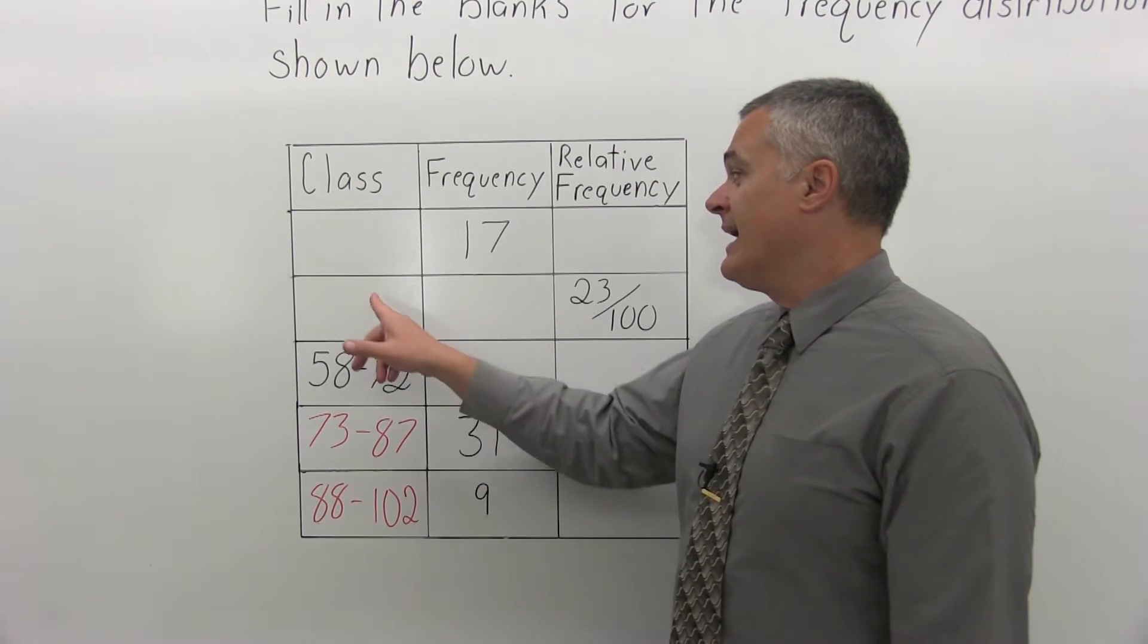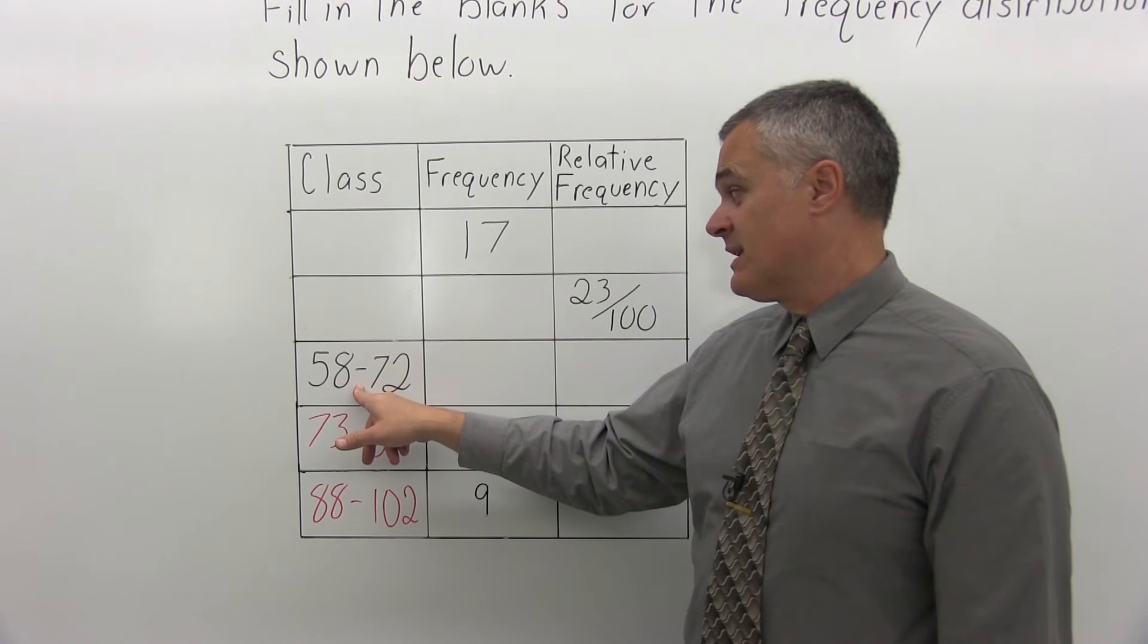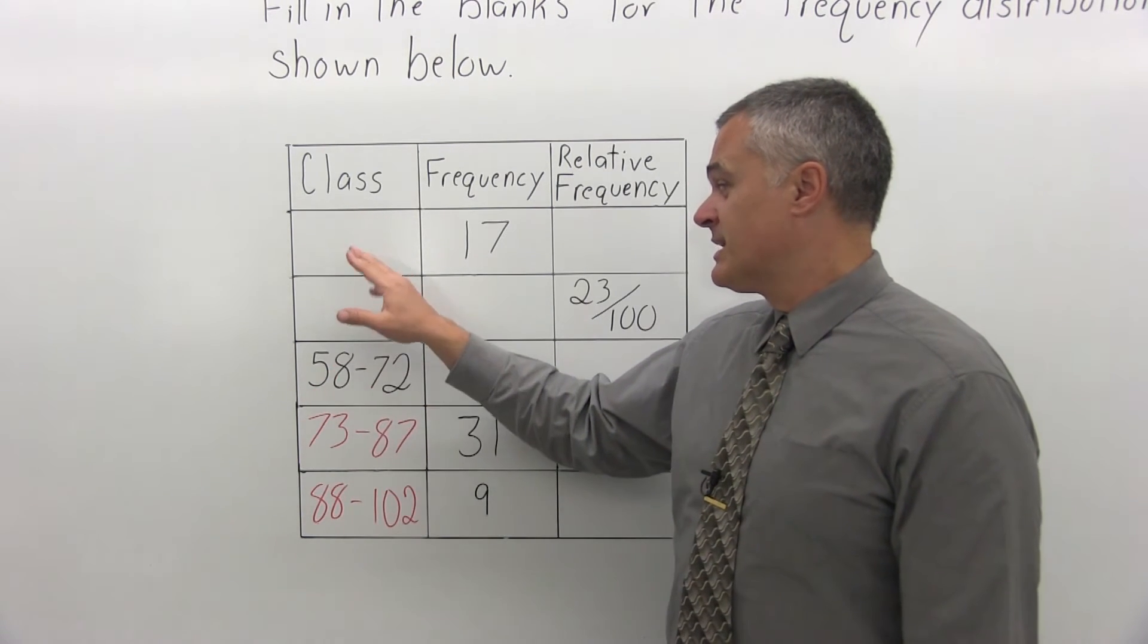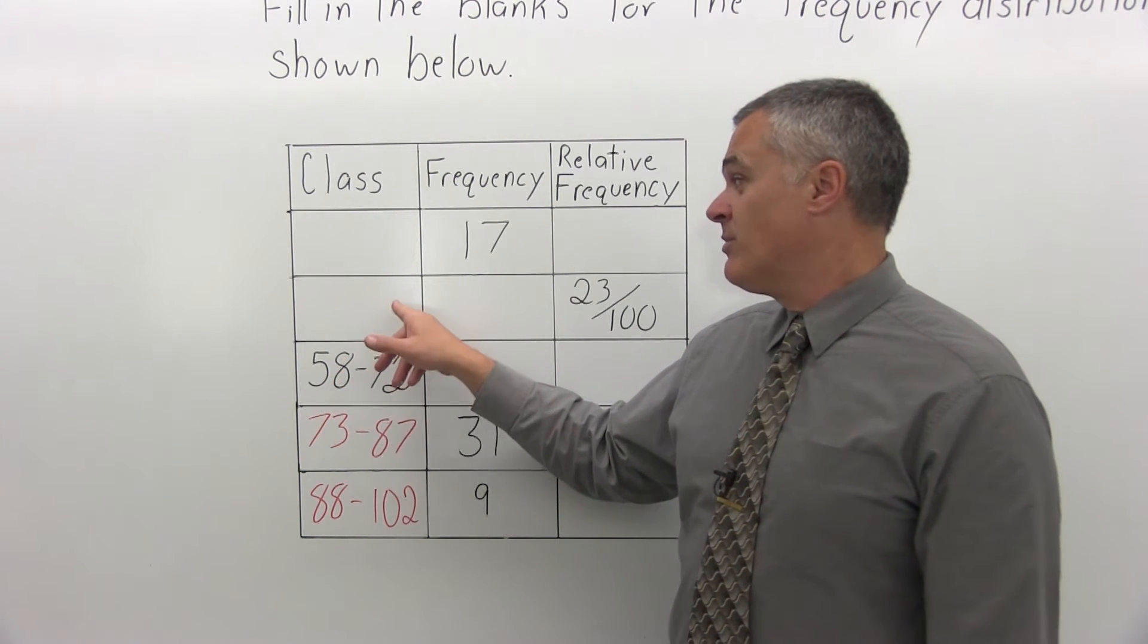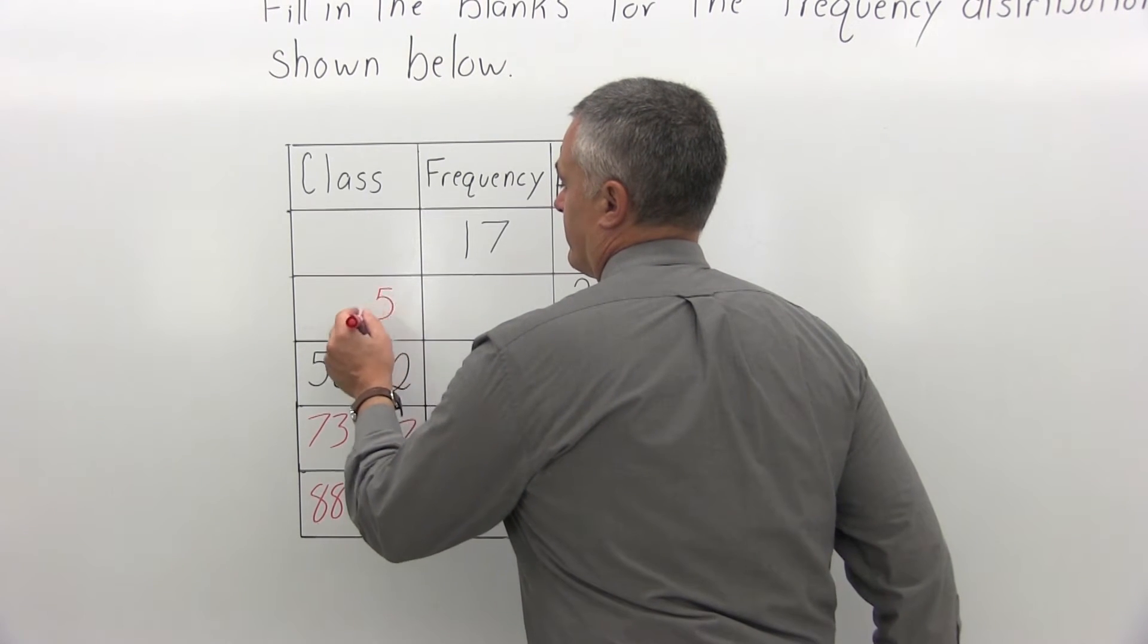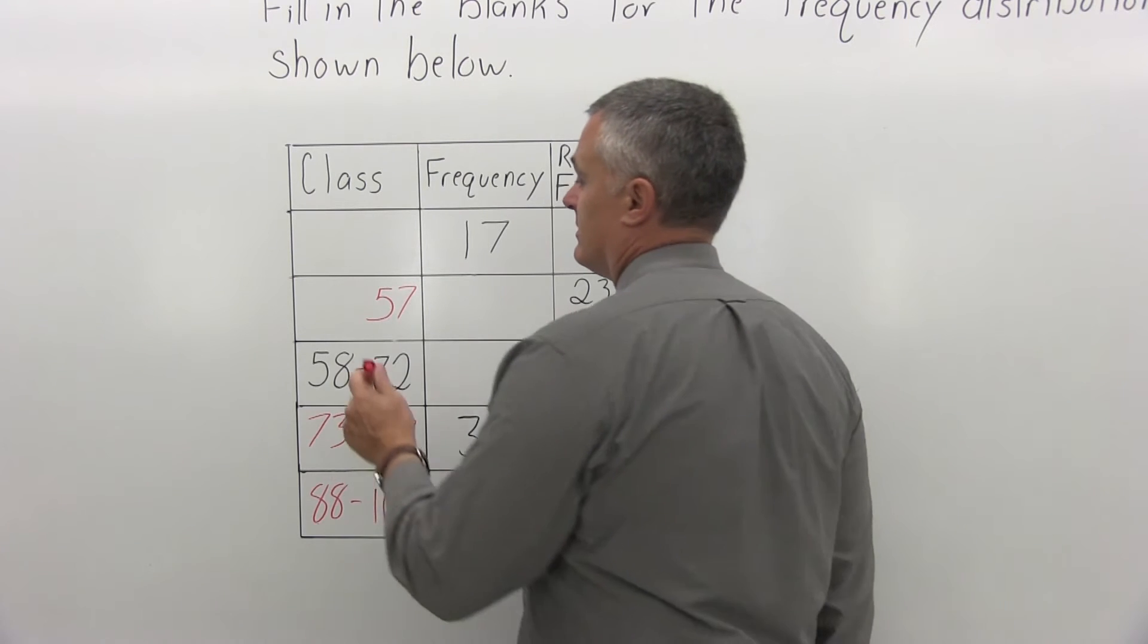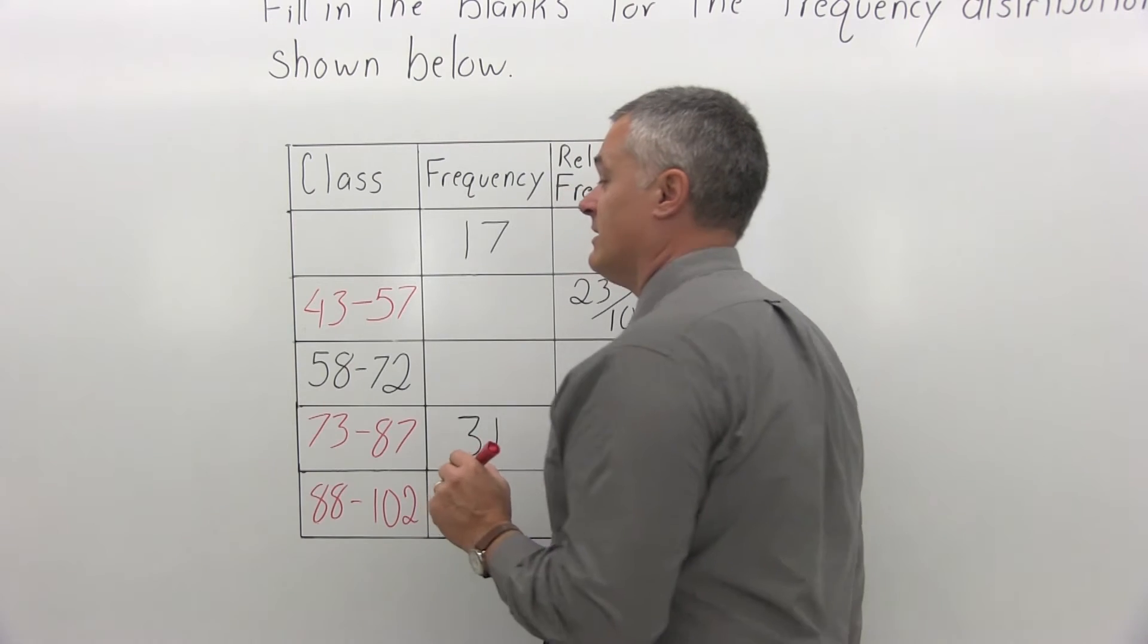So now I have two classes that are still blank before the class that's given with the 58 to 72. You can work this one in reverse. I got the starting points for the ones that came afterwards. But the ones that came before, if the class that's given to me begins at 58, the one before it must end at 57, if there's no gap and no overlap. And now something plus 14 was 57. So what plus 14 is 57? 43.